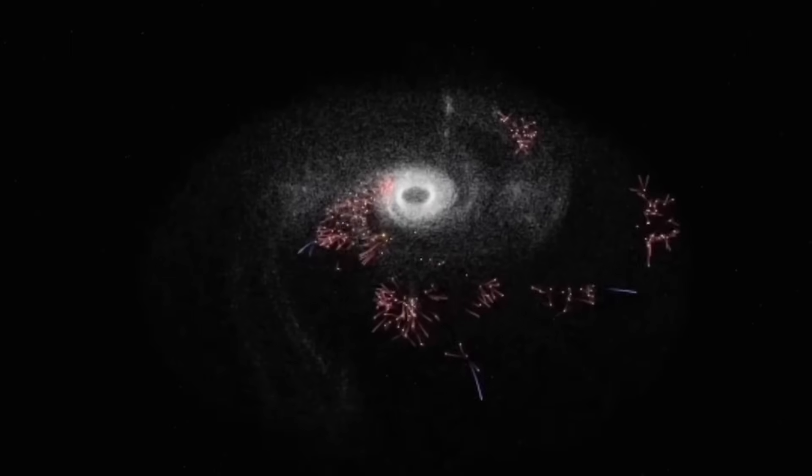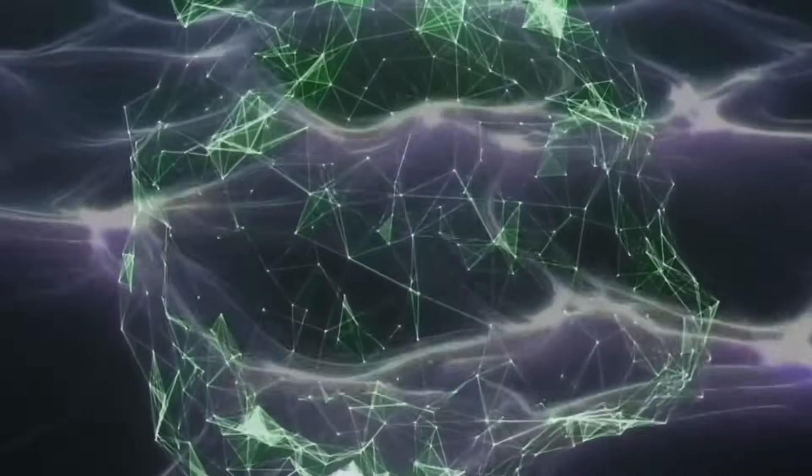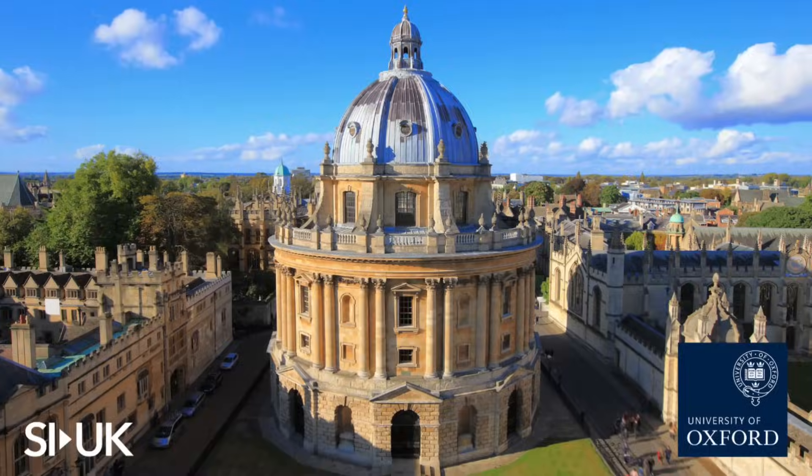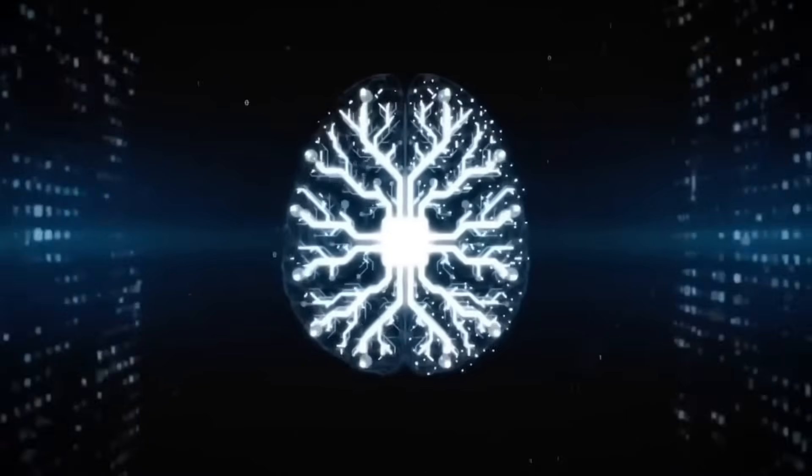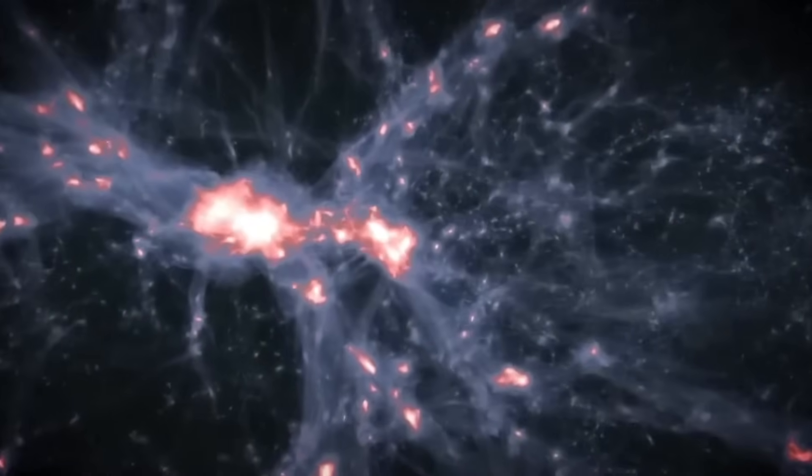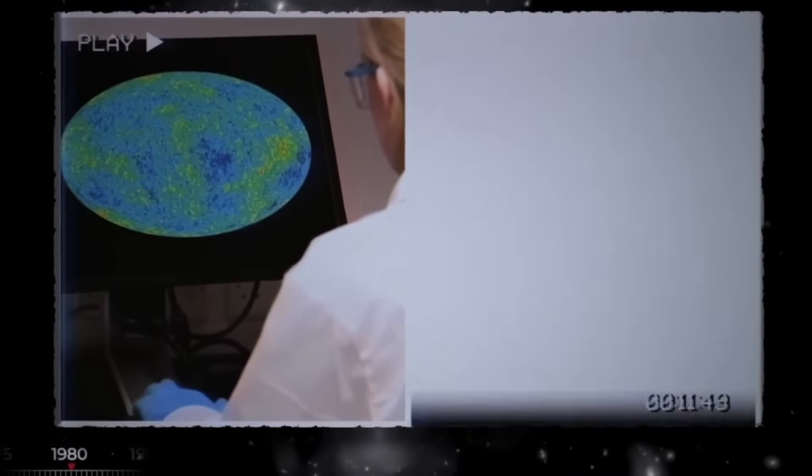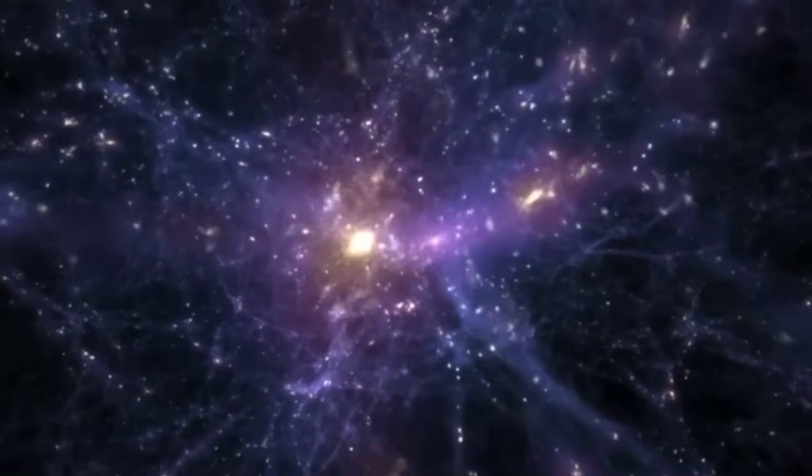When particles become entangled, they form connections that transcend space itself. These connections create what physicists call quantum non-locality, a property where information seems to travel instantaneously between entangled particles, regardless of distance. Einstein famously called this spooky action at a distance because it defied classical physics. Today, we know this is a fundamental property of our universe that cannot be reproduced without actual quantum processes. The holographic principle takes this even further, suggesting that all the information in our three-dimensional reality might be encoded on a two-dimensional boundary, like a cosmic version of a hologram. This revolutionary idea emerges directly from quantum gravity research at the very frontiers of physics.